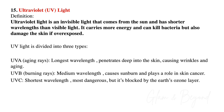I am aware that this is the part of the book no one ever likes to go over and study, but if you're prepping for that state board exam, you definitely need to review this information. Number fifteen, ultraviolet UV light. Ultraviolet light is an invisible light that comes from the sun and has shorter wavelengths than visible light. It carries more energy and can kill bacteria, but also damage the skin if you are overexposed. UV light is divided into three types: UVA, known as the aging rays, which has the longest wavelength and penetrates deep into the skin causing wrinkles and aging; UVB, known as the burning rays, with medium wavelength that causes sunburn and plays a role in skin cancer; and UVC, with the shortest wavelength, most dangerous, but it's blocked by the earth's ozone layer.